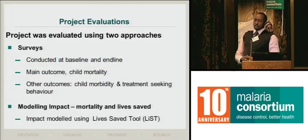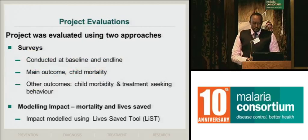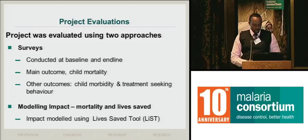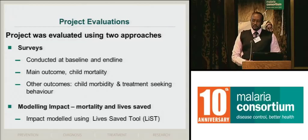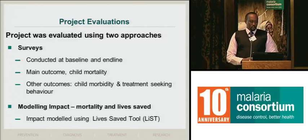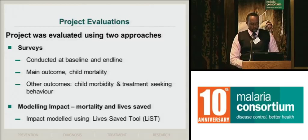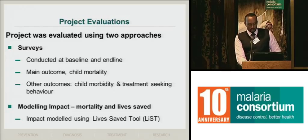Moving on to the evaluation. That was the routine data summary. Going on to the evaluations, we used two approaches: we did the usual surveys that we all know about, but also tried to look at impact through modeling — impact modeling. With the surveys, we conducted baselines and endlines, pre- and post-implementation of the program, with the main outcome being child mortality, but also several other outcomes like morbidity and treatment-seeking behavior. Under modeling, we were mainly interested in impact using the LiST lives-saved tool.